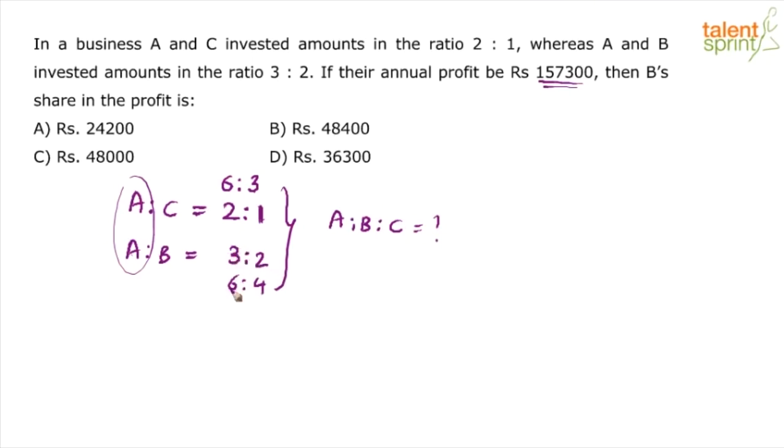So, 3 into 2, 6, 2 into 2, 4. The ratios have now changed to 6 is to 3 and 6 is to 4. In A is to C, A is equal to 6 parts. In A is to B, A is equal to 6 parts. In both the cases, A is equal to 6 parts. So, I can say A is 6 parts. Now, the comparison is easy. B is equal to 4 parts. And C is 3 parts. Done. You have got the ratio. 6 is to 4 is to 3.